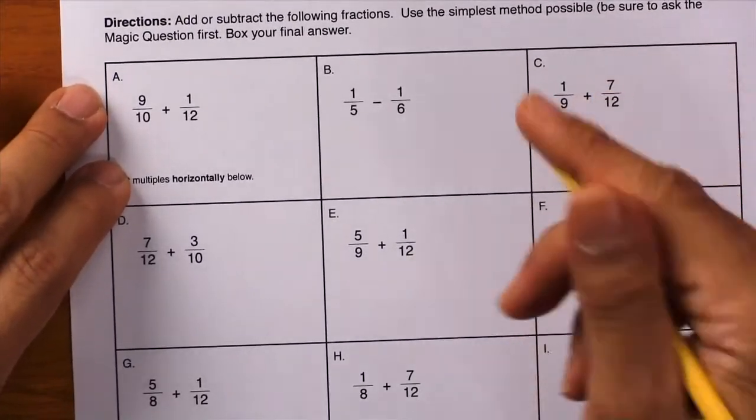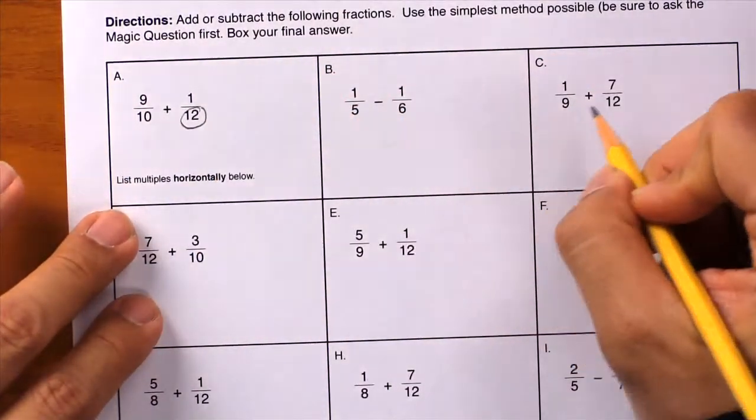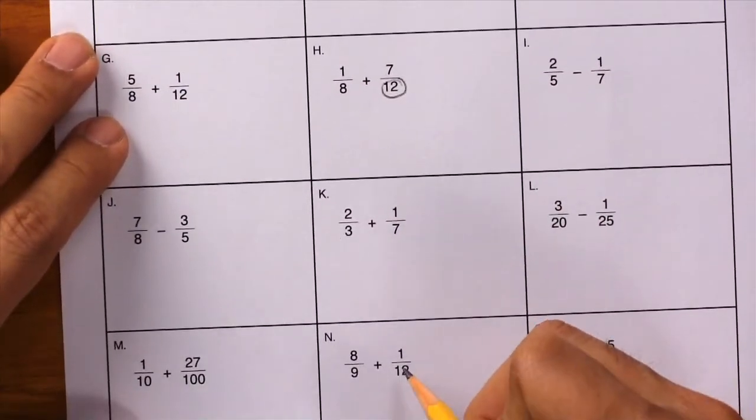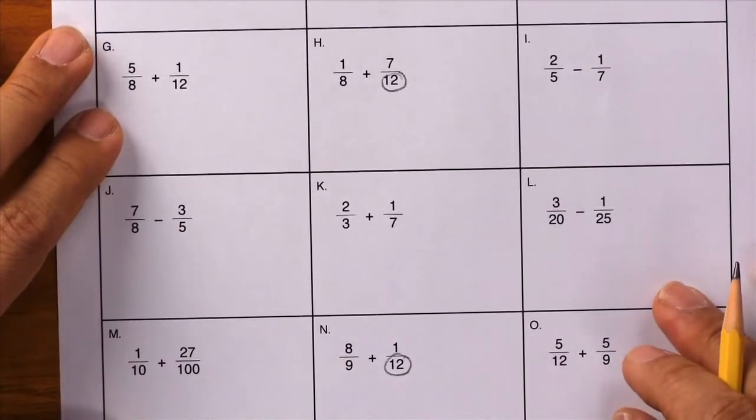In box A, the number 12 appears one, two, three, four, five, six times during this lesson. So let's use box A as an example.